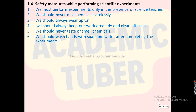Safety measures to follow while performing scientific experiments: First, we must perform experiments only in the presence of a science teacher. Second, we should never mix chemicals carelessly. Third, we should wear an apron. Fourth, we should always keep our work area tidy and clean after use. Fifth, we should never taste or smell chemicals. Sixth, we should wash hands with soap and water after completing experiments.